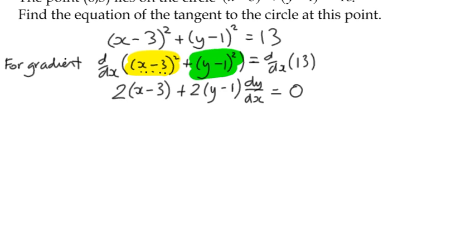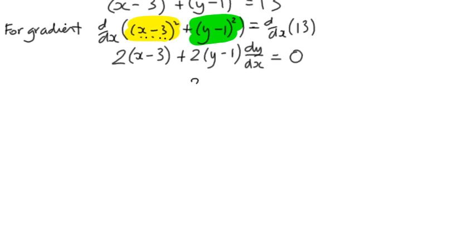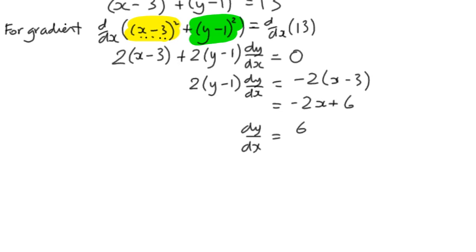We've got some terms multiplied by dy by dx and some terms not. So we keep the 2 times y minus 1 dy by dx on the left, and we bring that over to the other side. It becomes negative 2x minus 3, which we could multiply out, negative 2x plus 6, which means that dy by dx is 6 minus 2x divided by 2 times y minus 1.